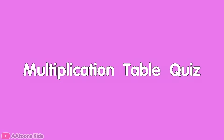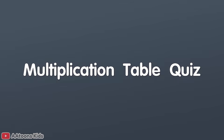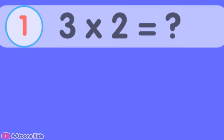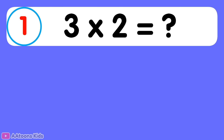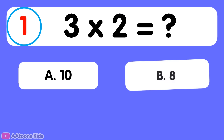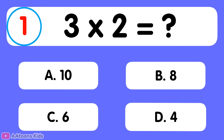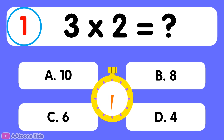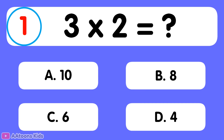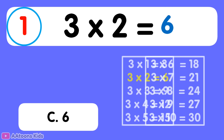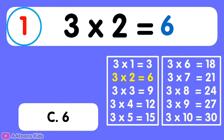Multiplication table quiz for kids. 3 times 2 is equal to... 6. 3 times 2 is 6.